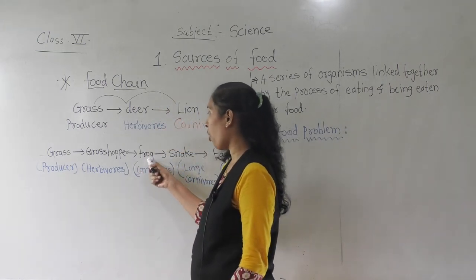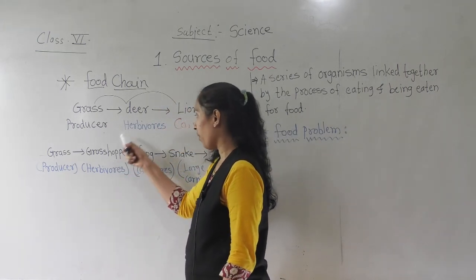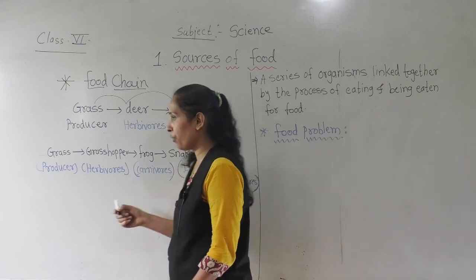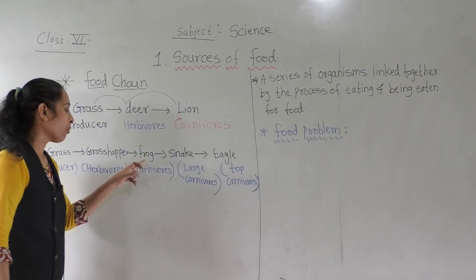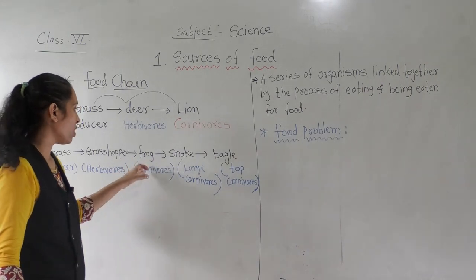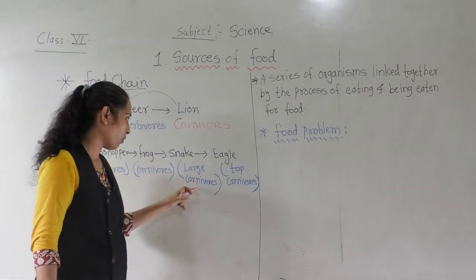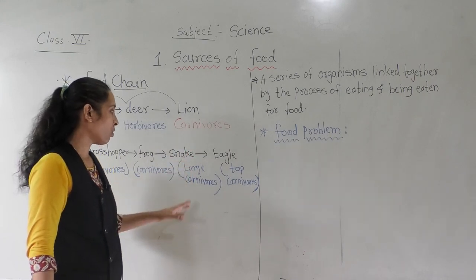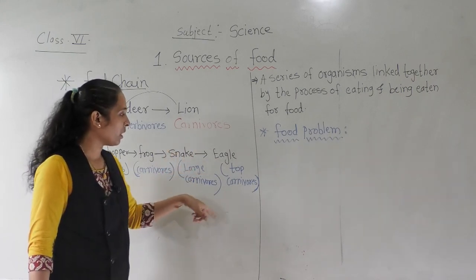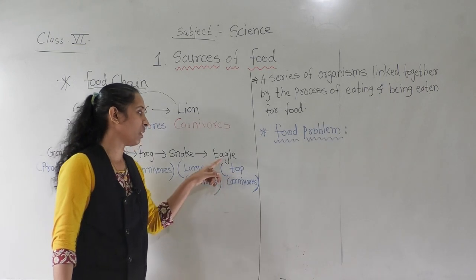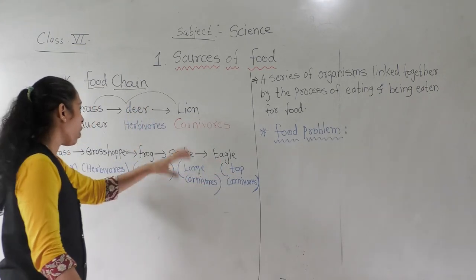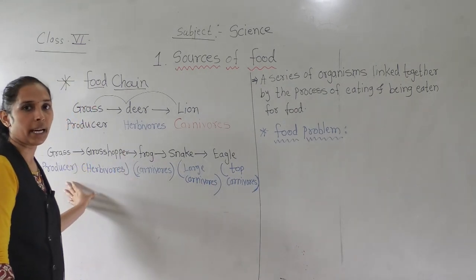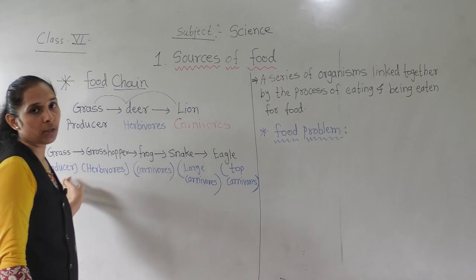The grasshopper is eaten by the frog, and the frog is a carnivore. The frog is a small carnivore which is eaten by a larger carnivore — the snake. And the snake is a large carnivore which is eaten by the top carnivore, that is the eagle. So all these animals, whether herbivores or carnivores, are directly or indirectly dependent on the producer, that is the green plants.